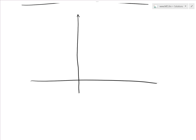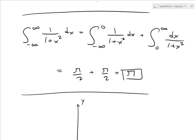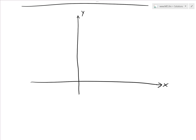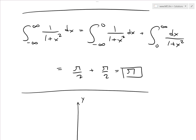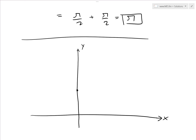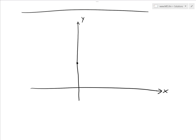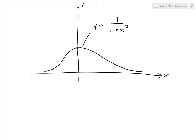Let's draw the function. At x equals 0, the value is 1 over 1 plus 0 which is 1. As x goes to plus or minus infinity, since x squared is always positive, the function approaches zero. The curve is symmetric and always positive, so the total area from negative infinity to infinity equals pi — quite phenomenal.